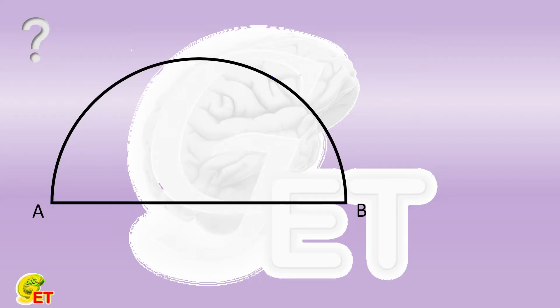On the arc there are two points C and D. The lines AC and BD intersect at point S. We plot ST perpendicular to AB at point T.